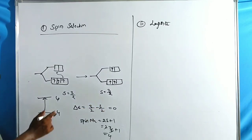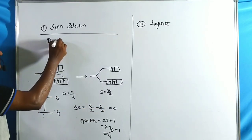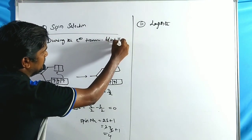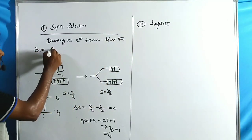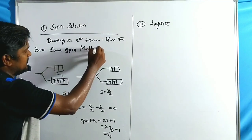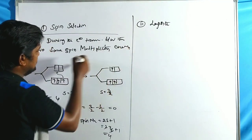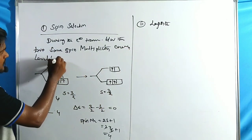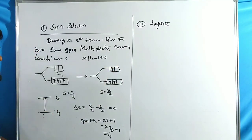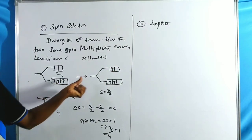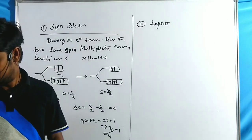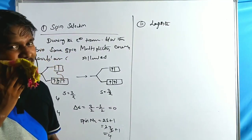Since delta S = 0, the electronic transition easily occurs. The spin multiplicity is 2S+1 = 2(3/2)+1 = 4 for both levels. Electronic transitions between two energy levels of the same spin multiplicity are called spin allowed transitions.